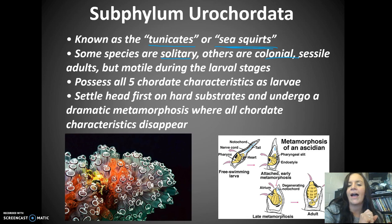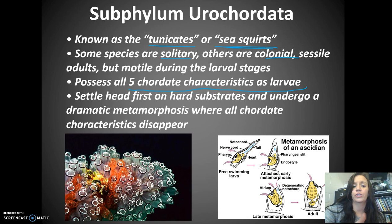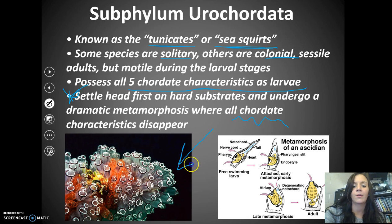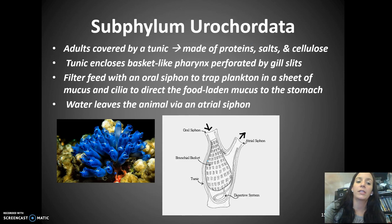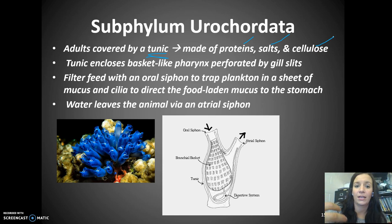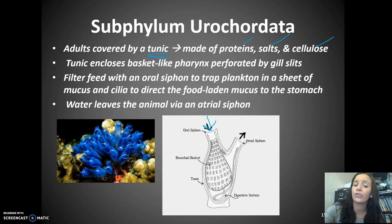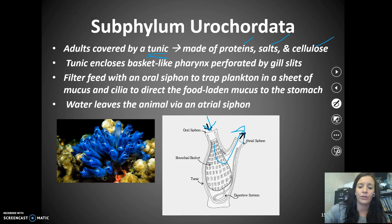Tunicates settle headfirst into a hard substrate, where they undergo a dramatic metamorphosis — all chordate characteristics disappear and they end up looking like what you see in the image. They're called sea squirts and are covered by something called a tunic made of protein, salt, and cellulose, which encloses a basket-like pharynx with gill slits. They use an oral siphon to trap plankton via a sheet of mucus and cilia, directing it to the stomach. Water then leaves through the atrial siphon, and they have a small digestive system as well.